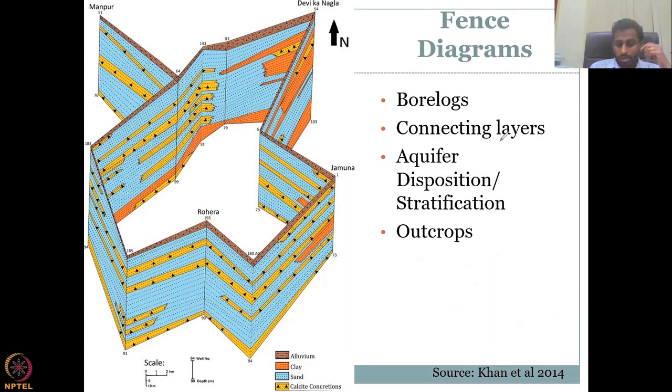So the connecting layers are found in the multiple lithologs, and then the aquifer deposition stratification is understood. Both are all same meanings. Then, as I said, borelog is same as borehole core sample or lithologs, and just the name would differ between the region, but the understanding is the same. Same way aquifer disposition, which means how is the aquifer layer or stratification can be understood by this data and fence diagram. Also, you'd be able to look at the aquifer pinching and the aquifer coming out called outcrop.